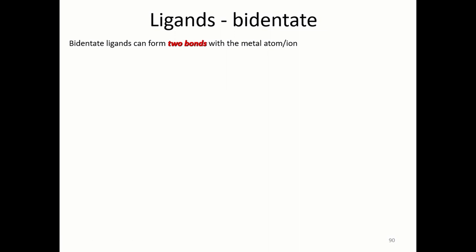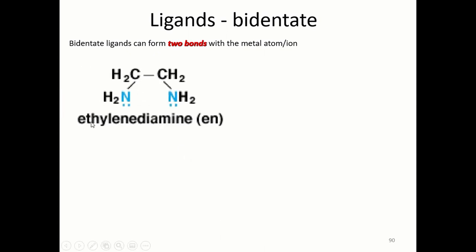Bidentate ligands, you may have guessed, can form two bonds with the metal atom or ions. You have two places in them that can, we say dentate, like teeth, like they're biting into the metal. And to show you and kind of illustrate that, this EN, ethylenediamine, has two nitrogens on it. Both of those nitrogens have a non-bonding lone pair of electrons, so it can donate here and it can donate here in two places, so it can form two bonds. It is bidentate.